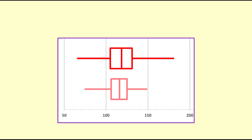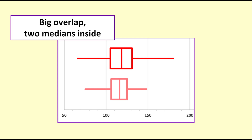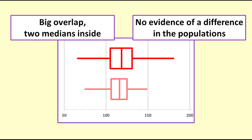In this pair of box plots, each median lies within the box of the other sample. We cannot conclude that there is a difference back in the population. For this sample, the median weight of the red apples is higher, but we cannot conclude that this is also the case in the population of red and pink apples.